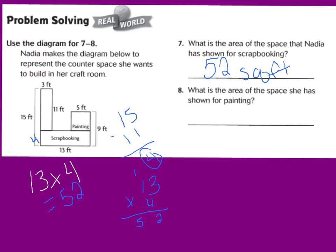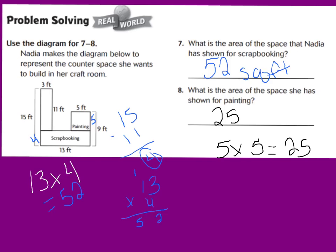For number eight, I need to find the area of the painting portion of the room. It's a perfect square, meaning all sides are equal. I can see that one side is five feet, so all sides are five. I multiply five times five, which equals 25. The area for the painting portion of her room is 25 square feet.